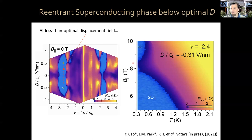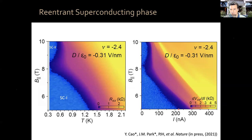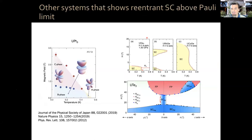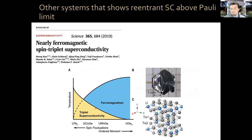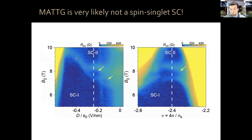Moreover, none of those mechanisms can explain what I'll show you now: at less than optimal displacement field, as a function of in-plane magnetic field, superconductivity gets killed, then reappears — reentrant superconductivity at large in-plane magnetic field. You can see this in both T_BKT and the critical current. This is extremely unusual, and doesn't happen via the other mechanisms I mentioned. In fact, this typically only happens in the uranium family of compounds: uranium germanium, uranium rhodium germanium, uranium cobalt germanium, and uranium Te₂ — famous as ferromagnetic superconductors or nearly ferromagnetic spin-triplet superconductors. In our case, we can tune this reentrant phase by displacement field and by density.